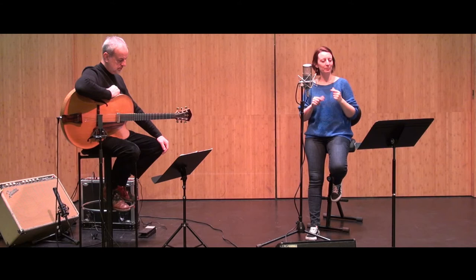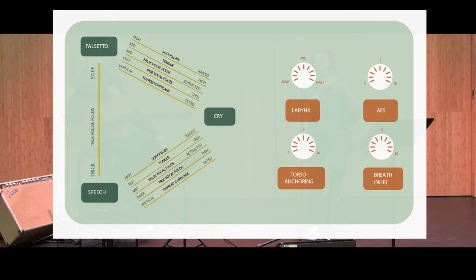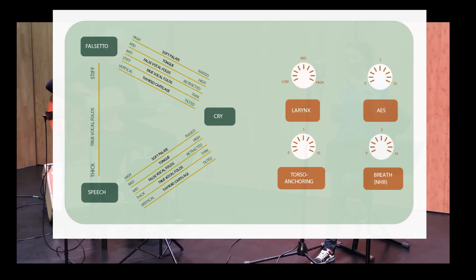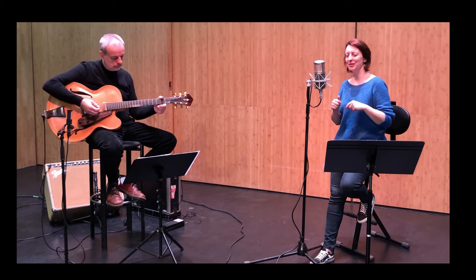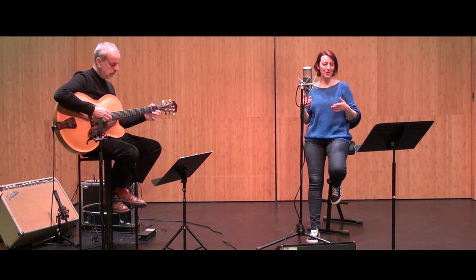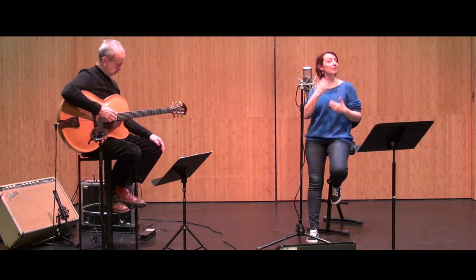Today we're going to try some variations, because if you're looking at the mixing table model, if you really use clear speech, clear cry, clear facetto, that's not so much heard in music. So a lot of times you're going to use combinations, although it's really important and really good to practice them clear first, because then you really feel — in speech these are my thick vocal true vocal folds and everything else is relaxed — so you can really feel your stiff folds, or if you cry that you're tilting and your throat is wider. So it's really good to practice them clear first. So once you've done that, let's have fun with variations. This is just an exercise to explore further your voice and how your body is connected to your sounds.